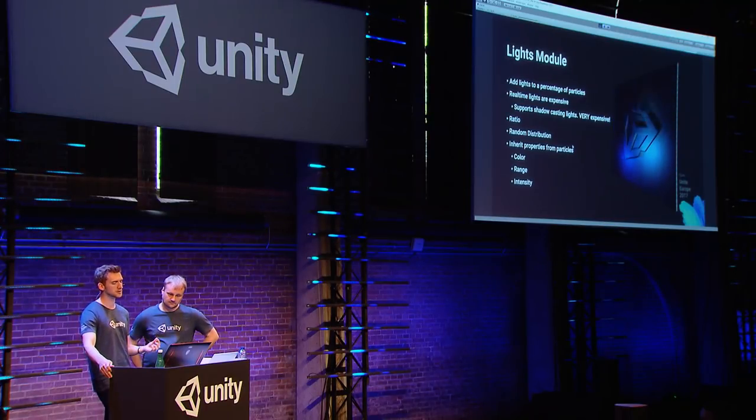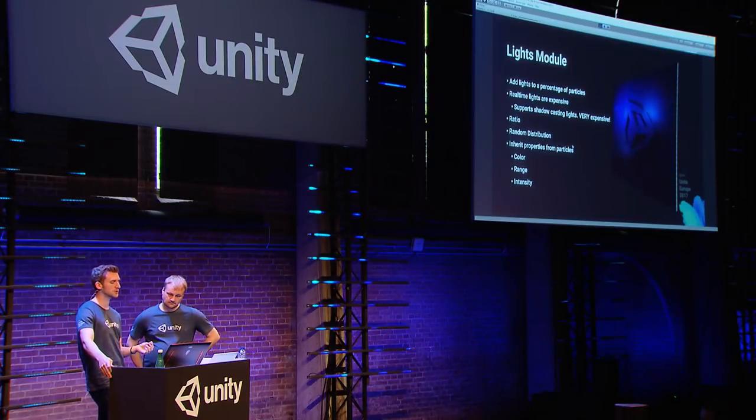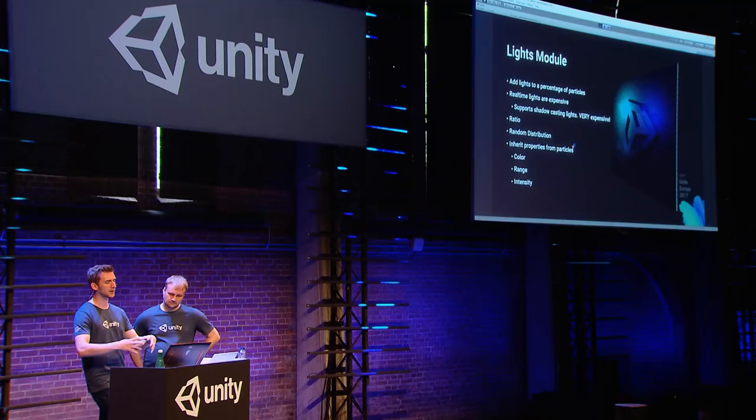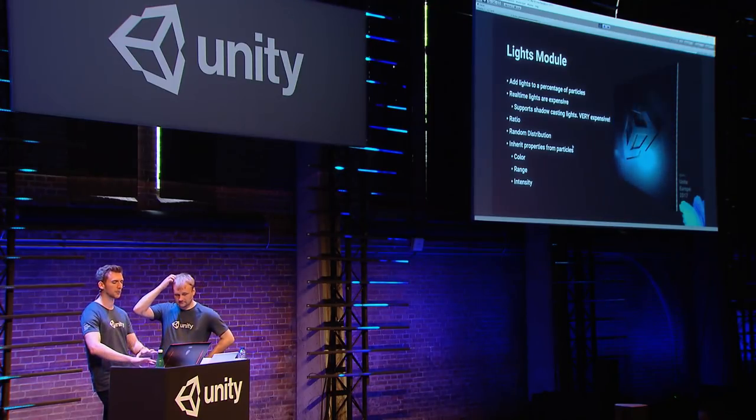There's a Random Distribution option for the lights. If you're creating a campfire and adding lights to 10% of particles, Random Distribution gives each particle a 10% random chance of having a light. Turning that option off means every 10th particle gets a light — a more even spread. Depending on the look you want, you can create a more uniform distribution of lighting generated by the particle system.